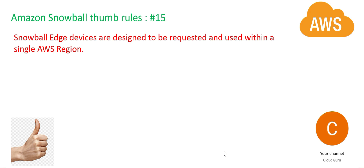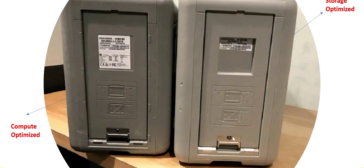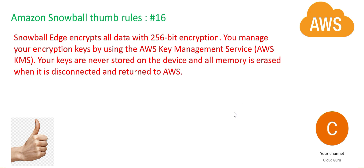In the AWS Cloud Practitioner exam, there are questions on this topic where they try to quiz and confuse you — you ordered the Snowball in one region and now dispatching it to another region. That is a strict no-no. Clients do not want to leak their data on the way from their data center to AWS. These boxes have data already encrypted using AES 256-bit encryption, and AWS KMS is used to store the keys. The keys are never stored on the device, and all memory is erased when it is disconnected and returned to AWS.